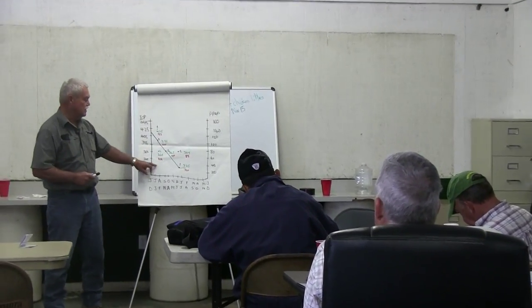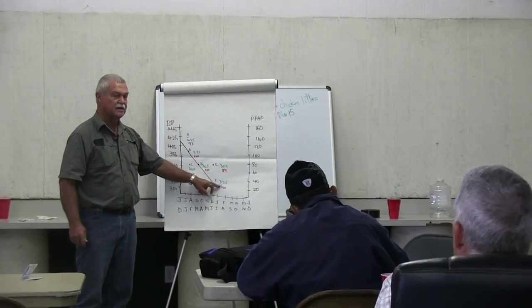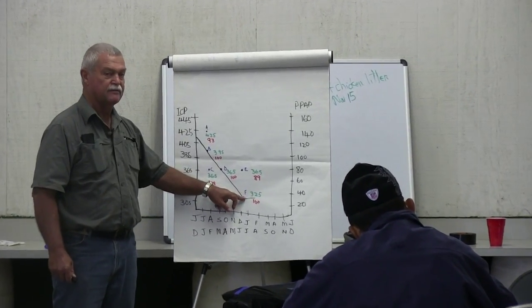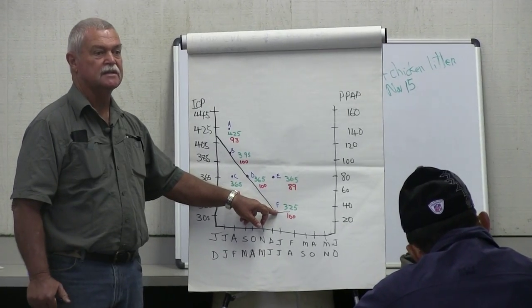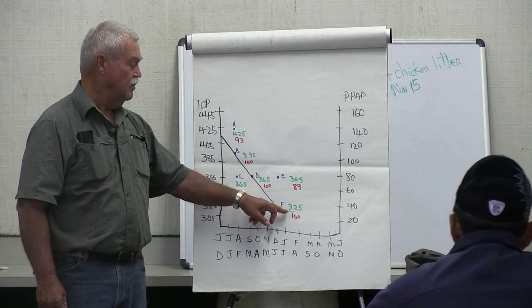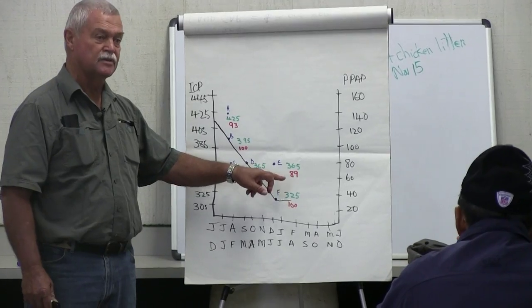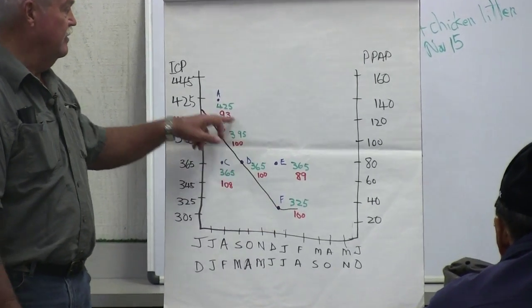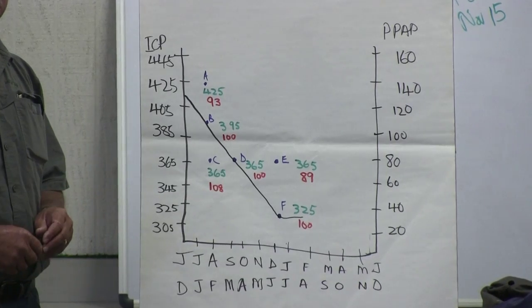If you come to the middle of the rainy season, that graph flattens off at 40 days, which means the average days from calving to first cycle at that period is 40 days. Over at the other end, it's about 150 to 160 days.